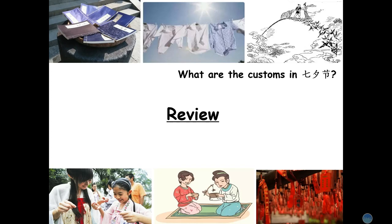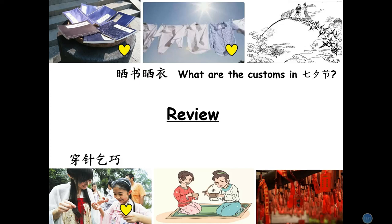Now let's review what we have learned today by answering the question: What are the customs in Qi Xi Jie? Looking at the pictures: the upper pictures show the custom of shai shu shai yi. The lower left picture shows the custom of chuan zhen qi chiao. The middle picture also shows chuan zhen qi chiao. The lower right picture shows the custom of qi qiu yin yuan. That's all for today. Thanks for watching.